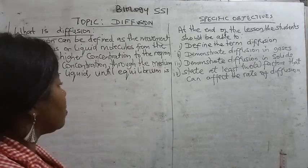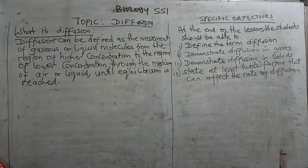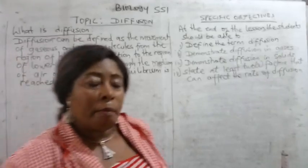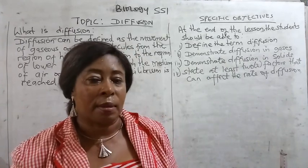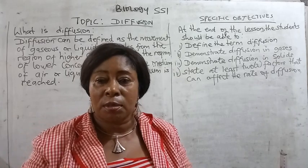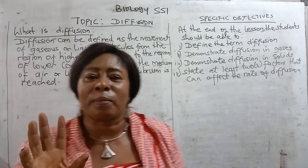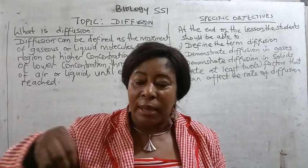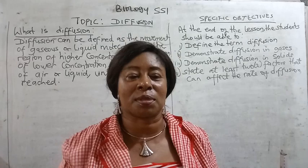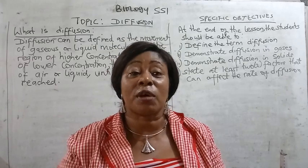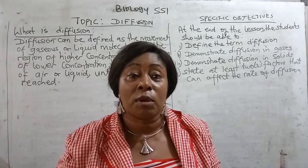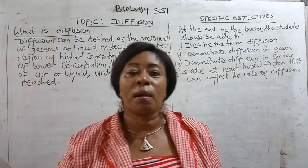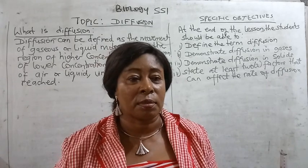We also want to look at some factors that can affect the rate of diffusion. A molecule moves from one end to the other. Some factors can speed up this rate of diffusion. If you get a cube of sugar and add it in hot water, what happens? You would notice that it dissolves faster in hot water than in cold water. So what does that tell you? That heat or an increase in temperature affects the rate of diffusion.